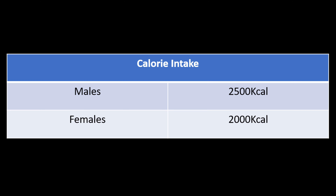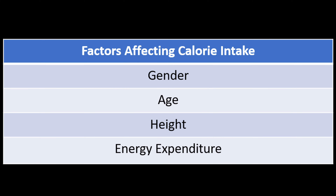Energy is measured in kilocalories and is obtained from the food that we eat. On average, a male requires 2,500 kcal per day whereas a female requires 2,000. Gender affects calorie intake because men tend to be taller and heavier than women, so they naturally require more calories to maintain their body shape. Calorie intake is also dependent on age, height, and energy expenditure.